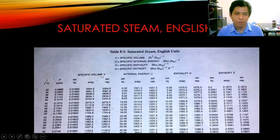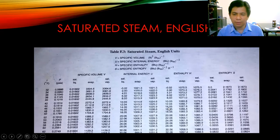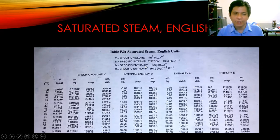For saturated volume, there is a column for saturated vapor and a column for saturated liquid. Similarly for enthalpy, there are columns for saturated vapor and saturated liquid. The same applies to entropy. The units here are: cubic feet per pound-mass for specific volume, BTU per pound-mass for enthalpy, and BTU per pound-mass per Fahrenheit for entropy.